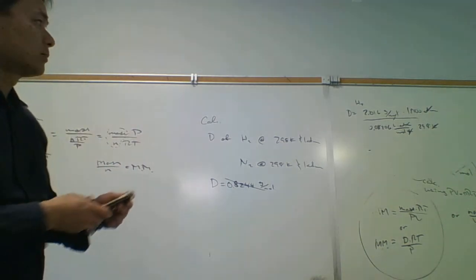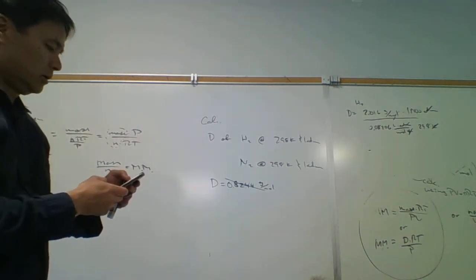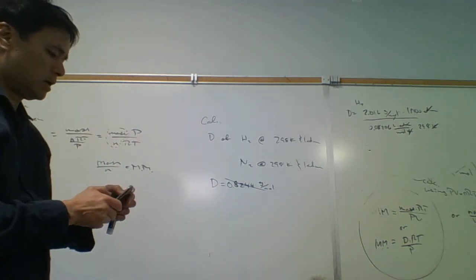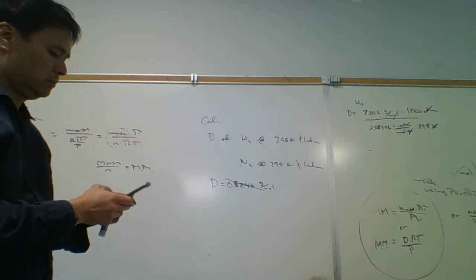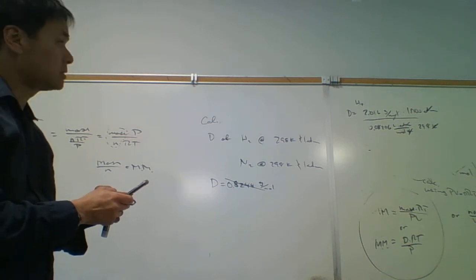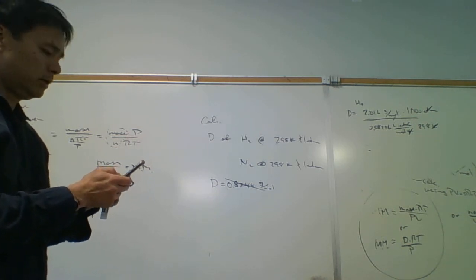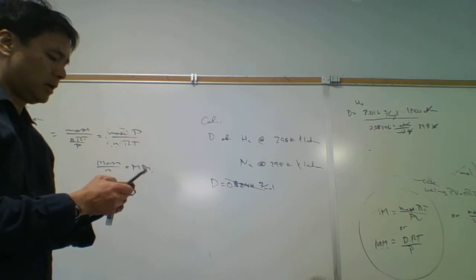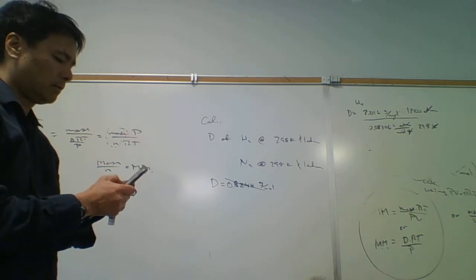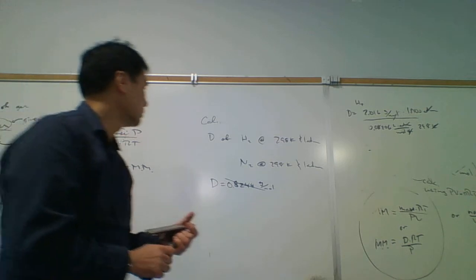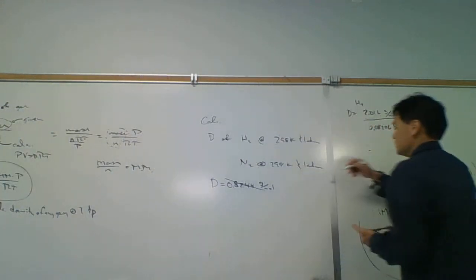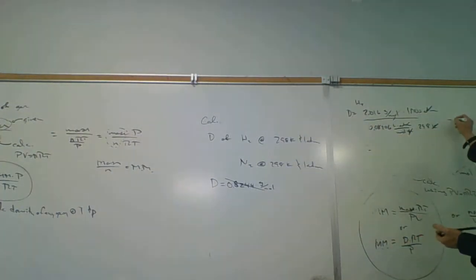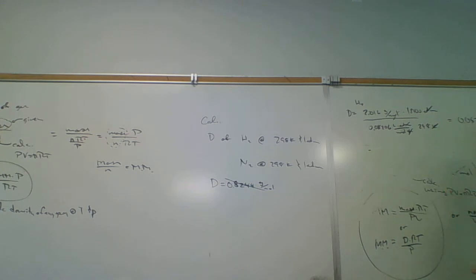And so as far as grams per liter goes, let's go ahead and punch that out: 2.016 divided by 0.08206 divided by 298. This is going to be 0.0824 grams per liter.